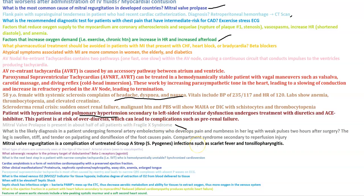A patient undergoing femoral artery embolectomy who develops pain and numbness in her leg with weak pulses two hours after surgery — the leg is swollen, stiff, and tender on palpation, and dorsiflexion of the foot causes pain. That's compartment syndrome secondary to reperfusion injury. Mitral valve regurgitation is a complication of untreated Group A strep infections such as scarlet fever and tonsillopharyngitis.